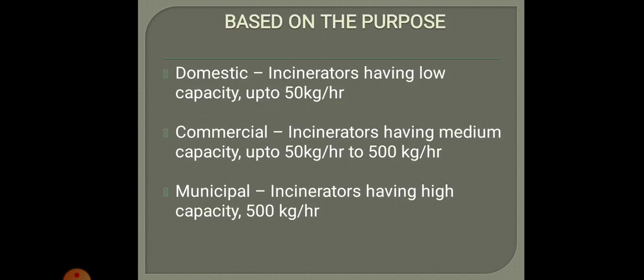Based on purpose, incinerators are classified mainly into three categories: domestic incinerators, commercial incinerators, and municipal incinerators. Domestic incinerators have comparatively lesser capacity — up to 50 kg per hour. Commercial incinerators have a medium capacity between 50 kg per hour to 500 kg per hour. Municipal incinerators have very high capacity, above 500 kg per hour.